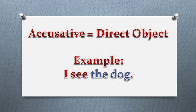The dog is the direct object. The subject is I. I is the subject, therefore the nominative case. So I see the dog, and the dog is the object, the direct object.